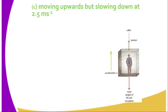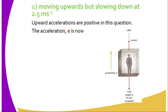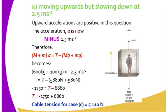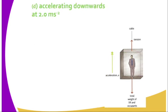So for moving upwards but slowing down: upward accelerations are positive in this question, but the acceleration is now negative at −2.5 m/s². By applying the same formula but taking acceleration as negative, since it is under the influence of deceleration, the tension in the cable decreases to 5110 Newtons.